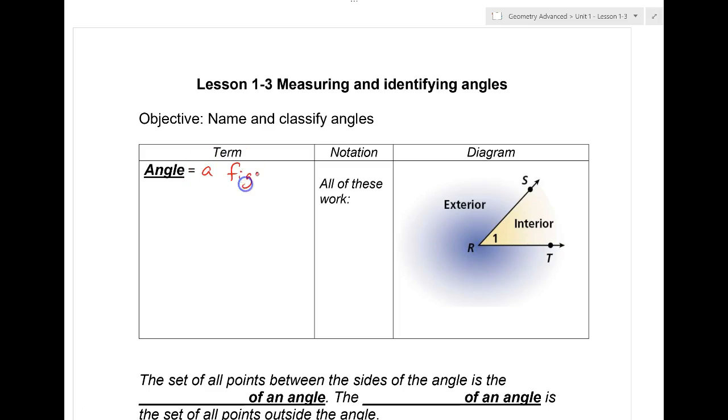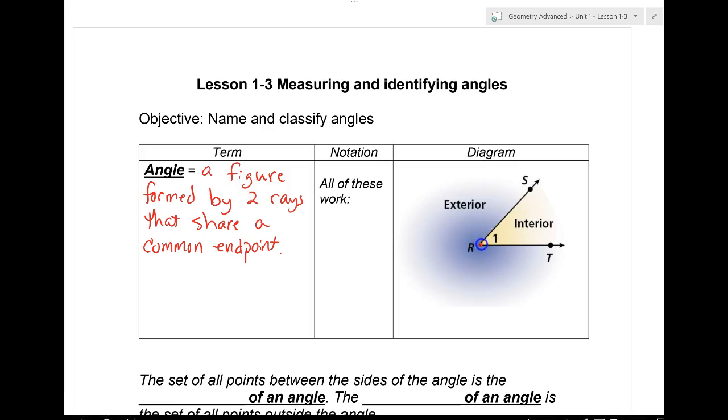An angle is a figure formed by two rays that share a common endpoint. So looking at this diagram over here, that common endpoint is going to be called, is point R, but it has a specific name. That endpoint, which is called a vertex.